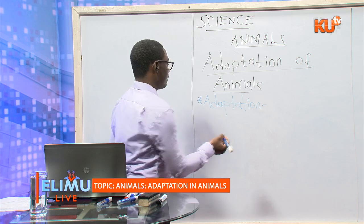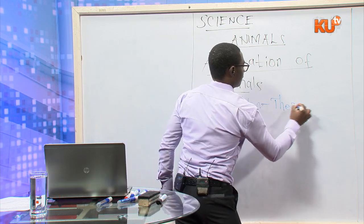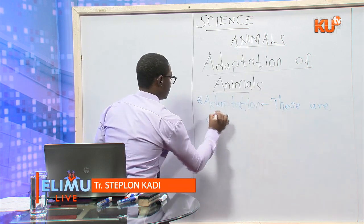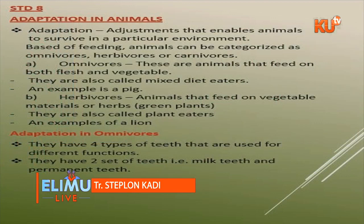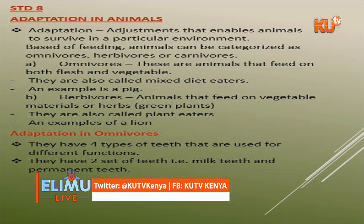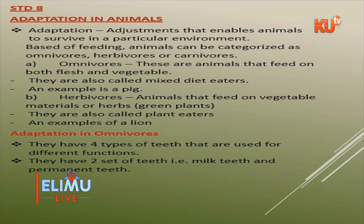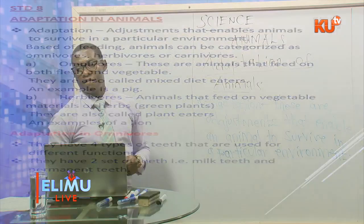Adaptations are adjustments that enable an animal to survive in a particular environment. Based on feeding, animals can be adapted in three different ways, and these three ways depend on what the animal eats.